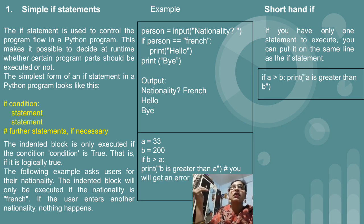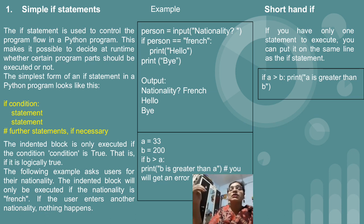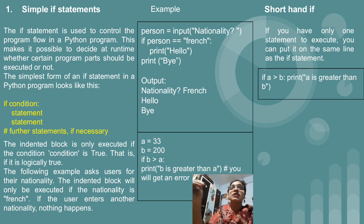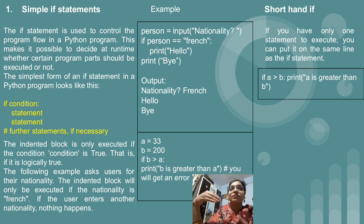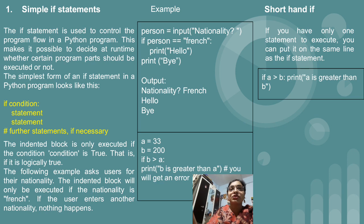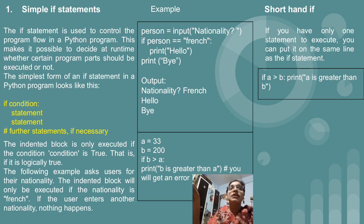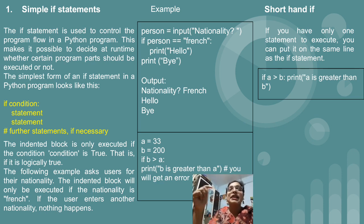First, we have taken the nationality from the user and stored that value inside the person variable. Then we have written the condition: if person == 'French' (in double quotes), then colon, then print hello. The print bye statement is exactly aligned below the if — so it is outside the if block and will always execute. The output will first ask for nationality. If the user enters 'french' (lowercase f), the condition matches and both hello and bye will print. Note: in the code we have written lowercase 'french', so if the user enters 'French' with a capital F, only bye will be displayed.